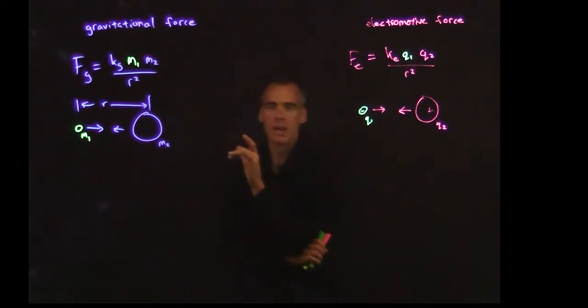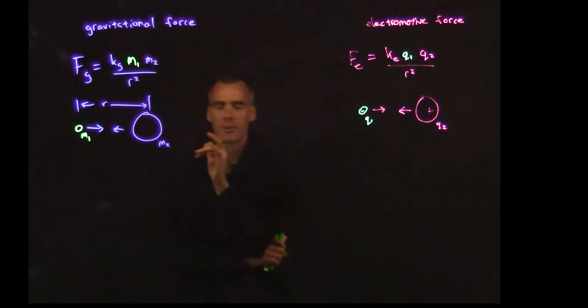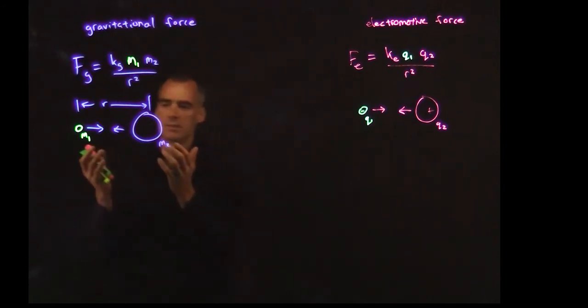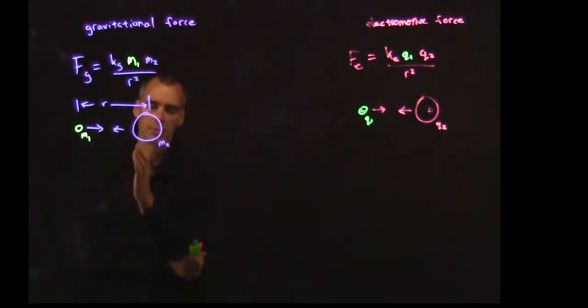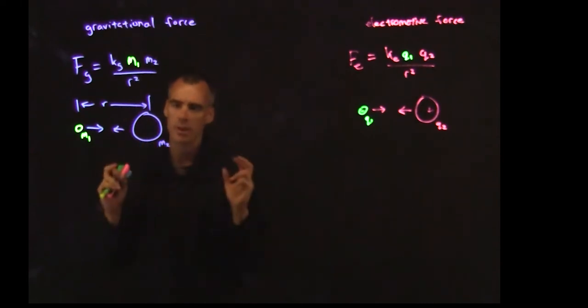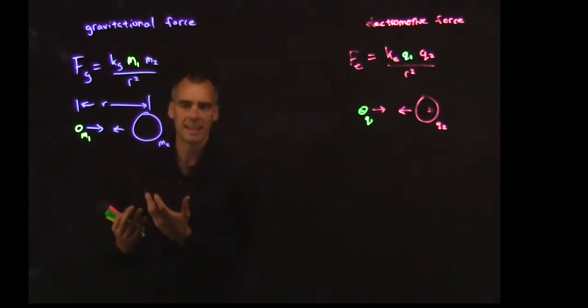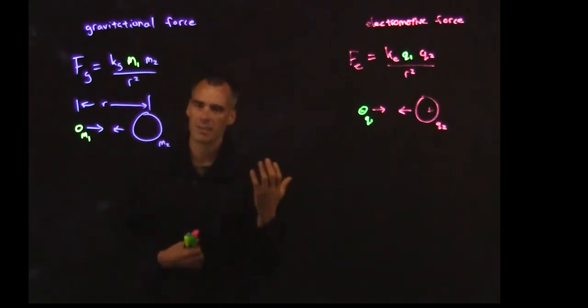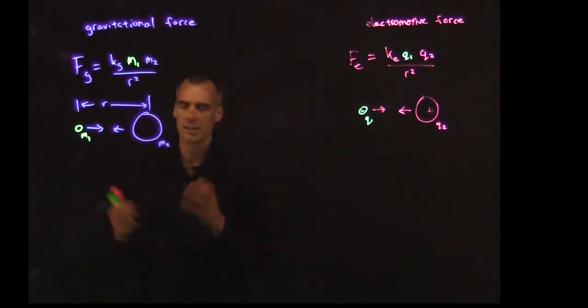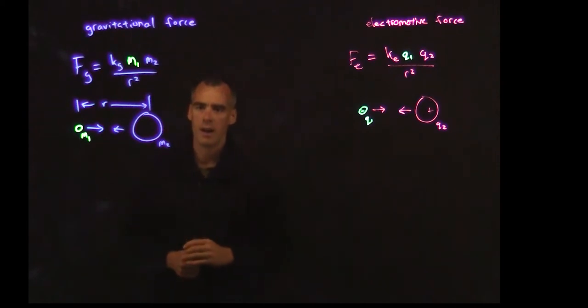It's sort of a side note here, but one of the things that when Isaac Newton discovered this gravitational force that he was criticized for, and he wondered about himself, was how could these two masses actually have this attractive force when they're not even touching? There's no ether between them, there's nothing connecting them, so where does this force even come from? Nowadays, we posit the idea of gravitons that sort of brings them together, but it begs the question of where does this force come from.